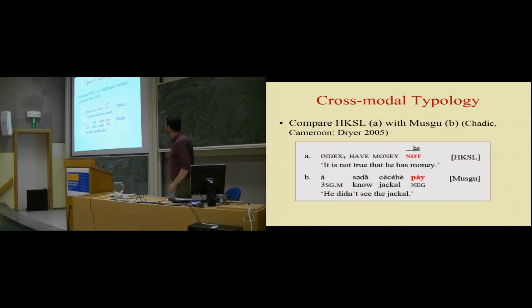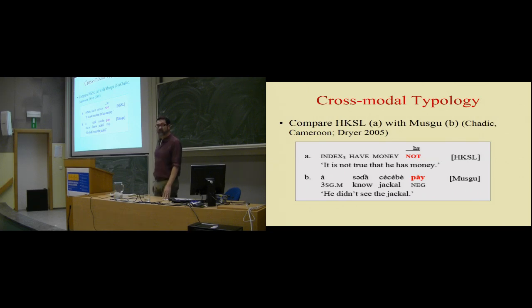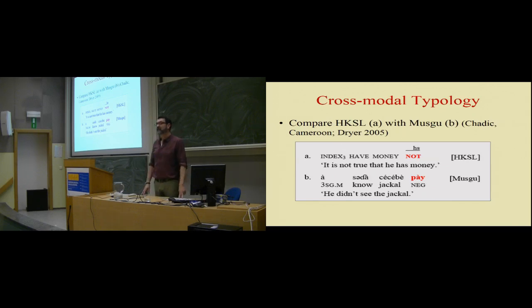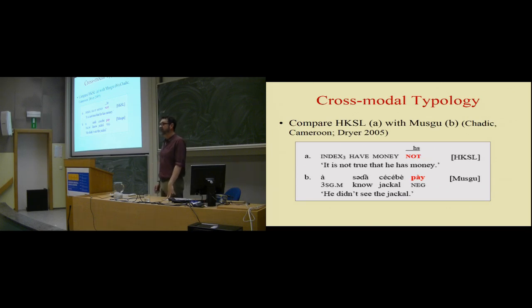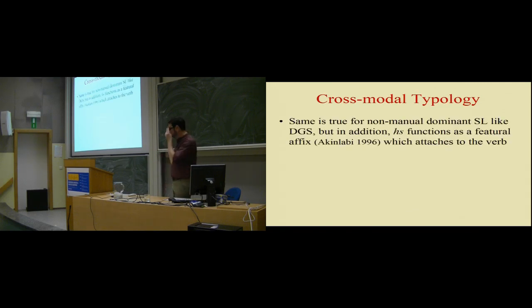Originally in French there was only one negative element — the pre-verbal element 'ne': 'je ne dis.' At a later stage, the element 'pas' was added. Originally 'pas' was an emphatic reinforcing element — 'pas' means 'step,' and was used with verbs of movement: 'I didn't walk a step.' There were other candidates like 'crumb' that could have grammaticalized, but it was 'pas' that prevailed. People used 'pas' as an emphatic element, and then it grammaticalized into a negative marker, losing its lexical meaning of 'step.'